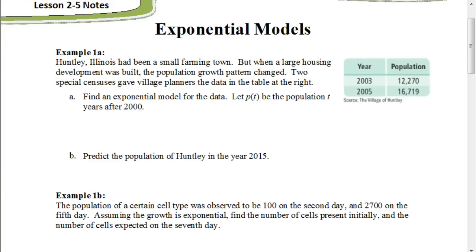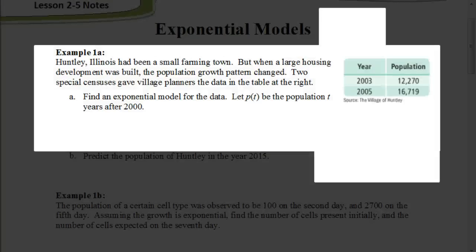So here we have a city, Huntley, Illinois, had been a small farming town. But when a large housing development was built, the population growth pattern changed. Two special censuses gave village planners the data in the table at the right. And then in Part A, it says, find an exponential model for the data. But let's read on, because this will be important. Where p(t) is going to be the population t years after 2000. That's important. Our value for t is going to represent the number of years after the year 2000.